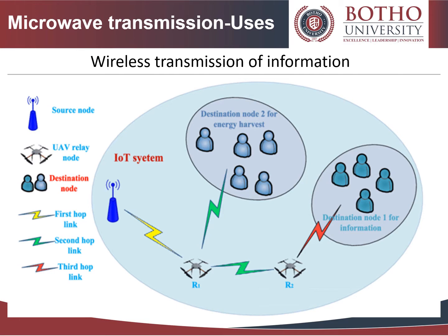The microwave link is used for wireless transmission of information. Television broadcasting is a perfect example of one-way communication. For two-way communication, this is accomplished using communications satellites, terrestrial microwave relay rings, and telecommunication networks including backbone or backhaul carriers in cellular networks.